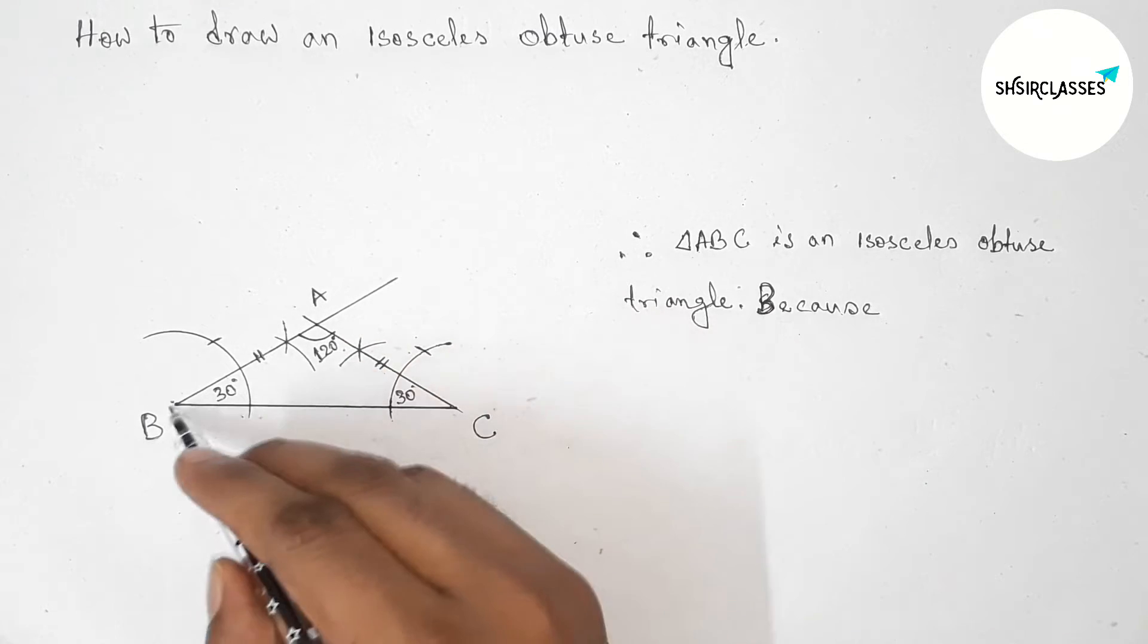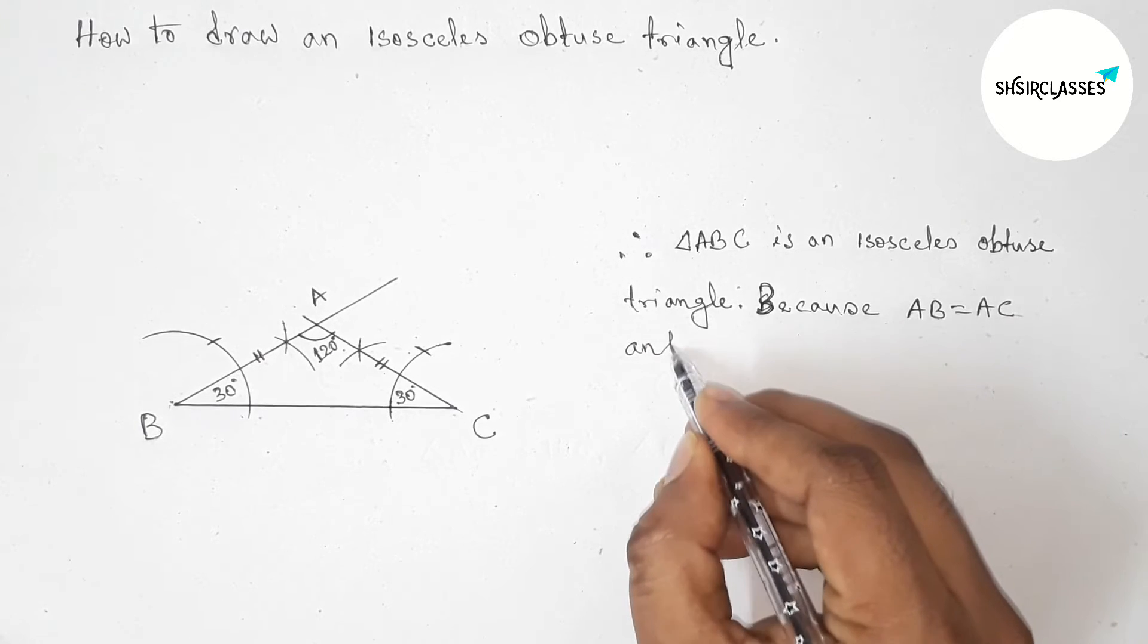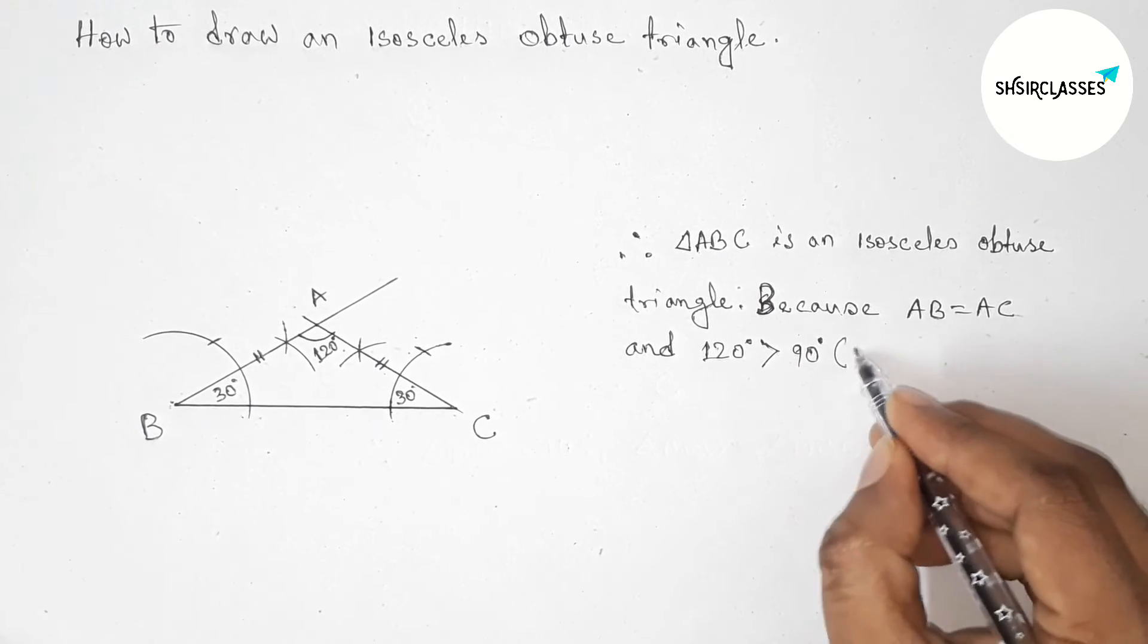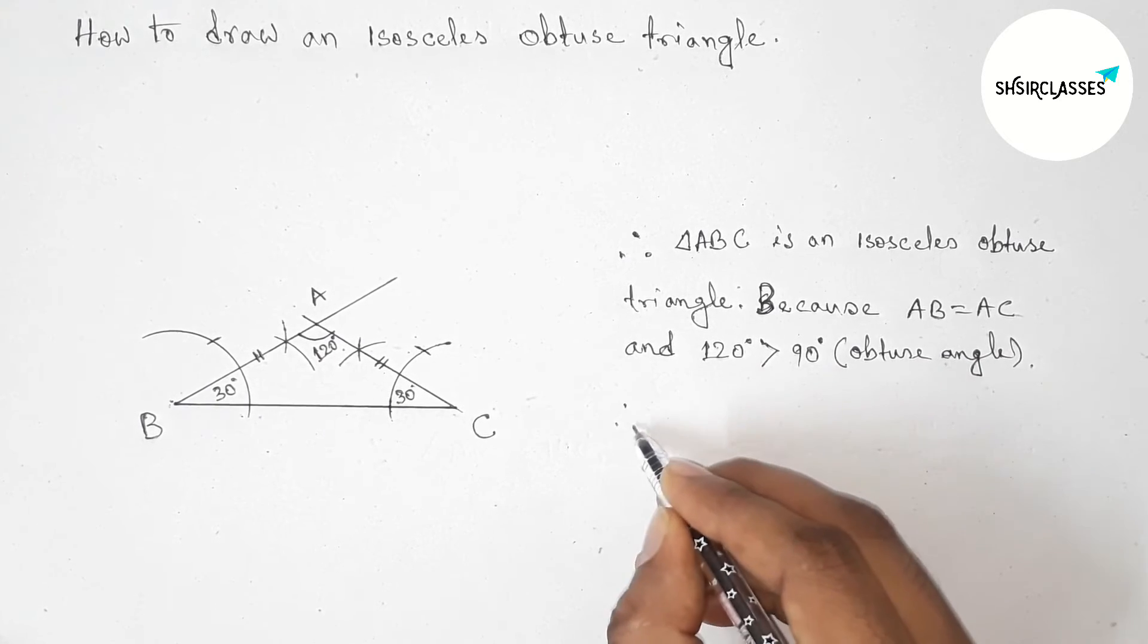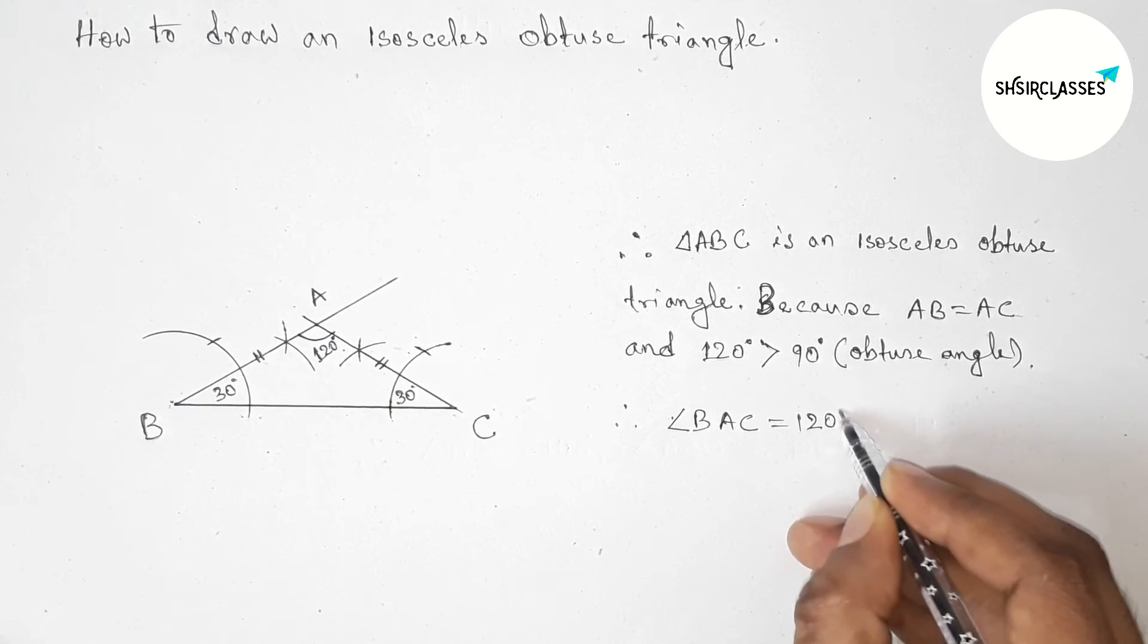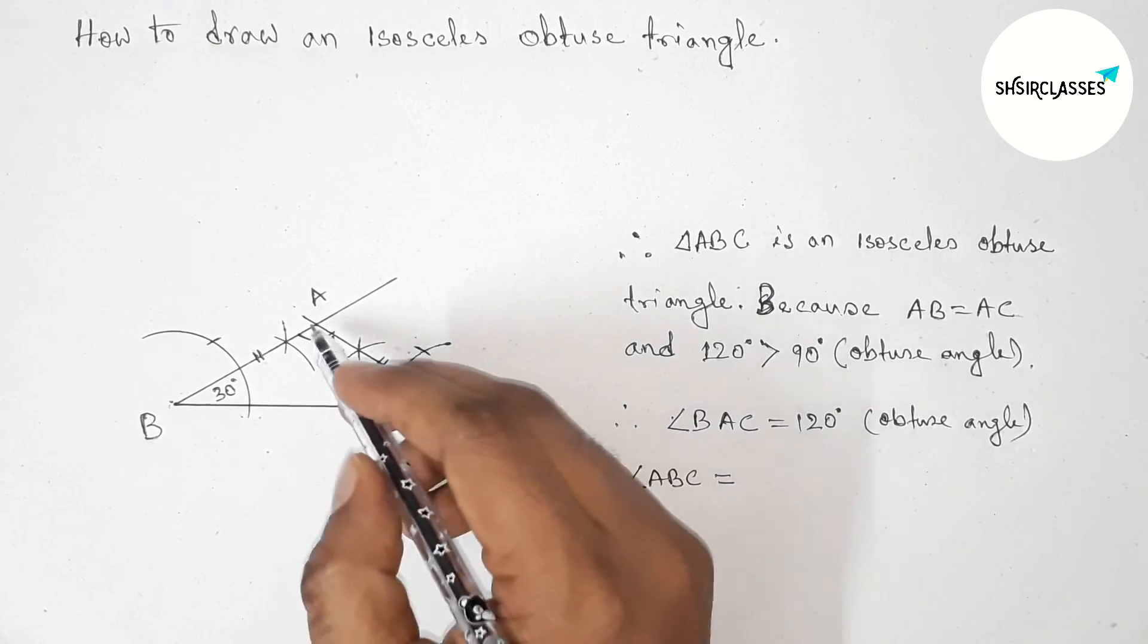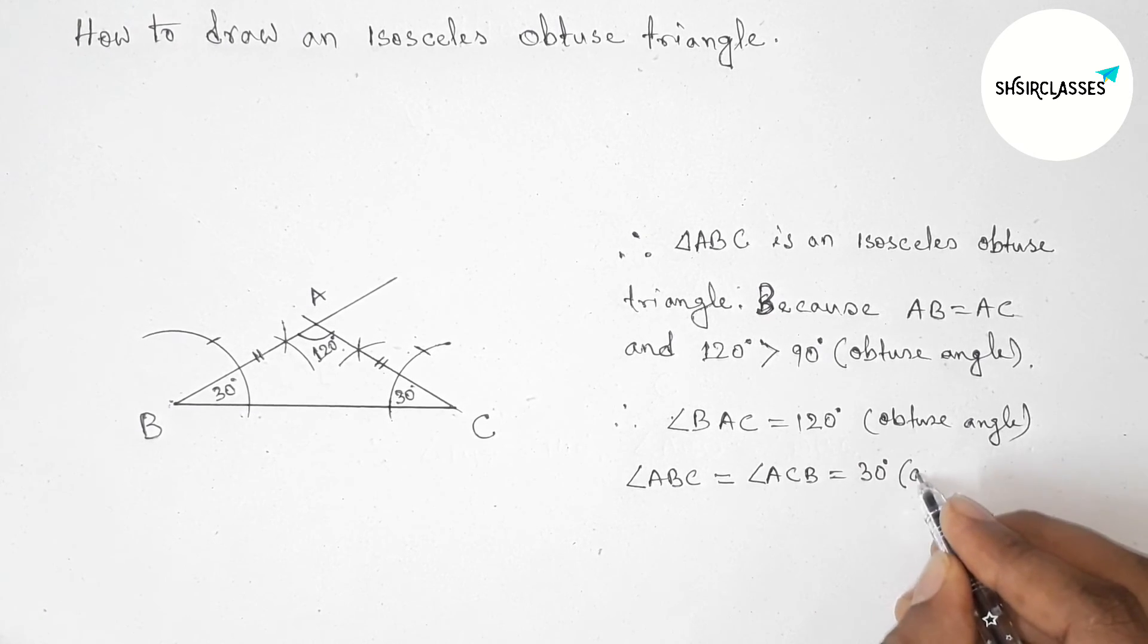First, here the two sides AB equal AC and angle BAC this is 120 degrees which is greater than 90 degrees. We know that an angle is obtuse angle if the angle is greater than 90 degrees and less than 180 degrees. So here angle BAC this is 120 degrees, so obviously this is an obtuse angle. And now angle ABC and angle ACB both are 30 degrees, so these are two acute angles.